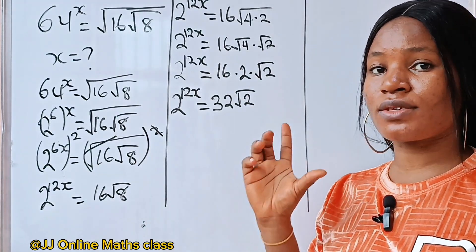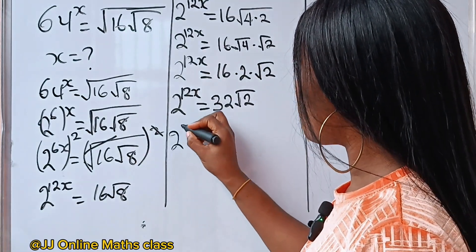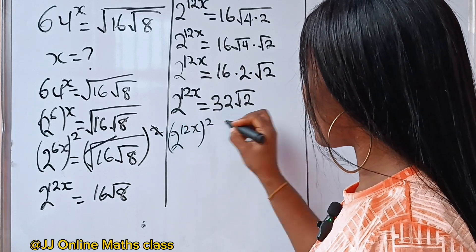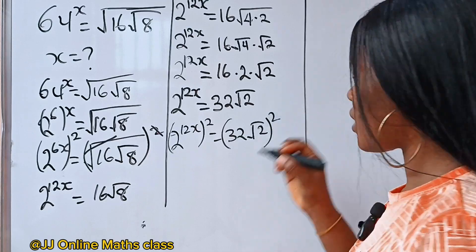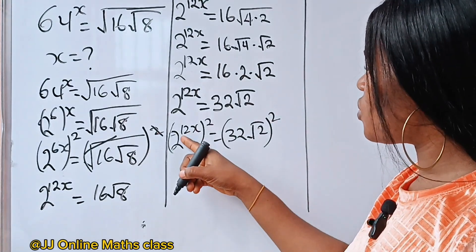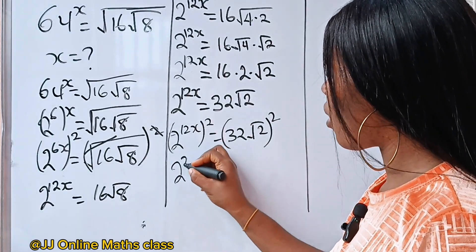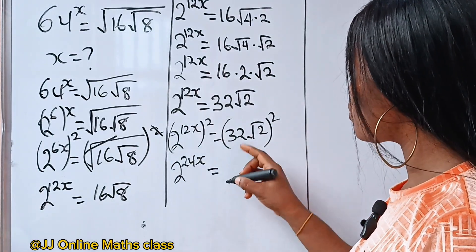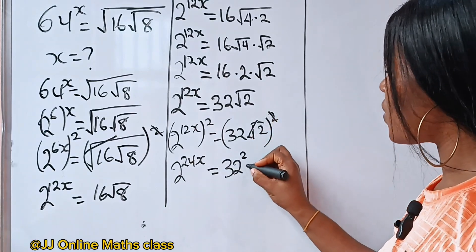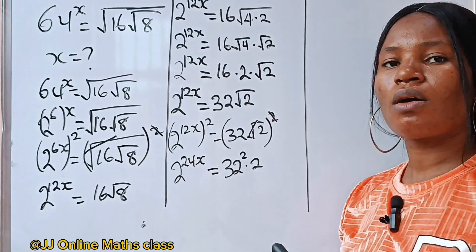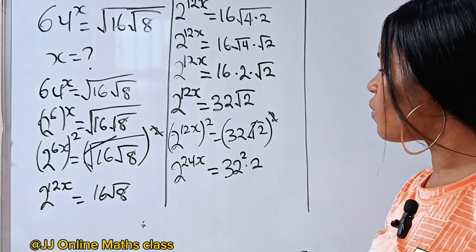At this point we need to square both sides of the equation again. So we have 2 to the power of 12x, squared, is equal to 32 root 2, squared. This will be 12x times 2, so this side will be 2 to the power of 24x. On the right, 32 will be raised to the power of 2, and root 2 will also be raised to the power of 2, which cancels the root leaving just 2.